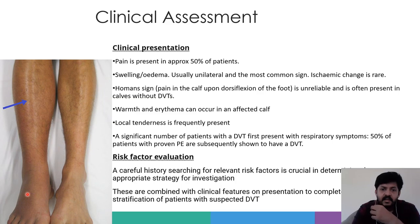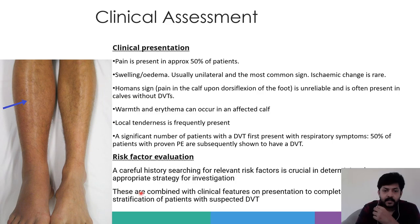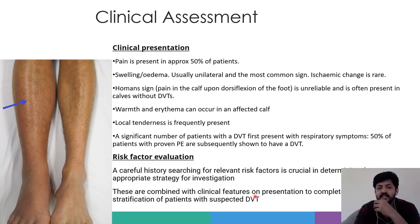If you strongly suspect DVT, never perform a Hohmann's Sign because there are high chances the thrombus may dislodge, form an embolus, and ultimately result in pulmonary embolism and death. A significant number of patients with deep vein thrombosis first present with respiratory symptoms, and 50% of patients with proven pulmonary embolism are subsequently shown to have a DVT. A careful history of symptoms, signs, and risk factors is crucial in determining the appropriate investigation strategy, combined with clinical features to form a formal risk stratification.